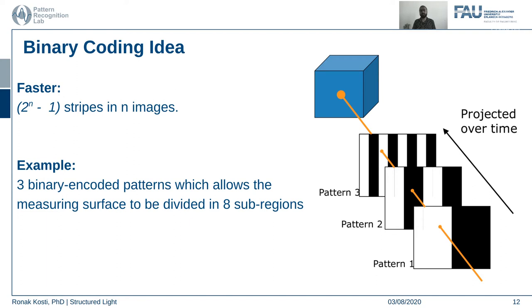The idea of binary coding is: instead of having one light strip, we project a black and white stripe pattern on the surface of the object, capture that image, then increase the stripe pattern, take the image again, then project the third pattern and take the image again. If the width of your image is 1024, the number of frames you will need is only about 10, because by the 10th pattern the width of the stripe will decrease to one pixel. To use this binary coded idea, you need 2^(n-1) stripes in n images.